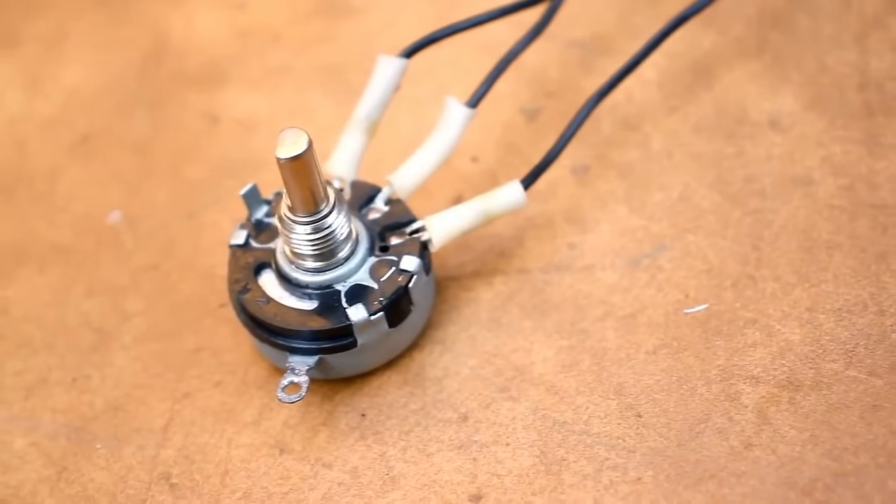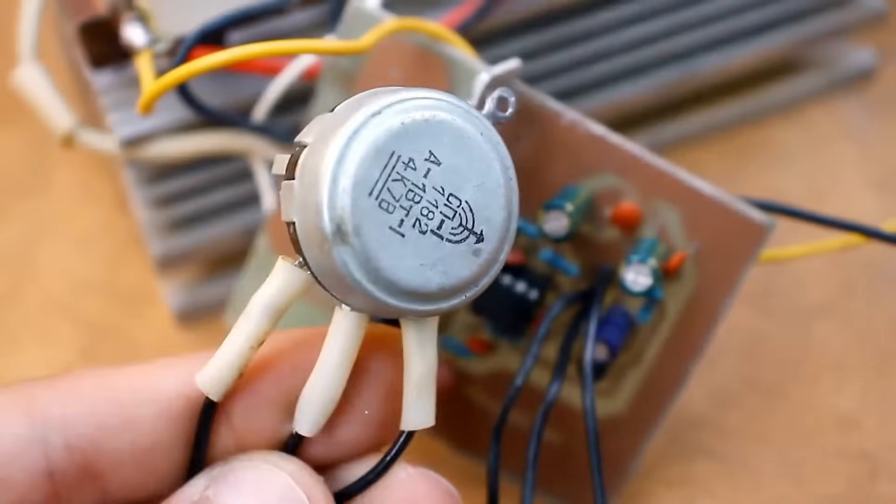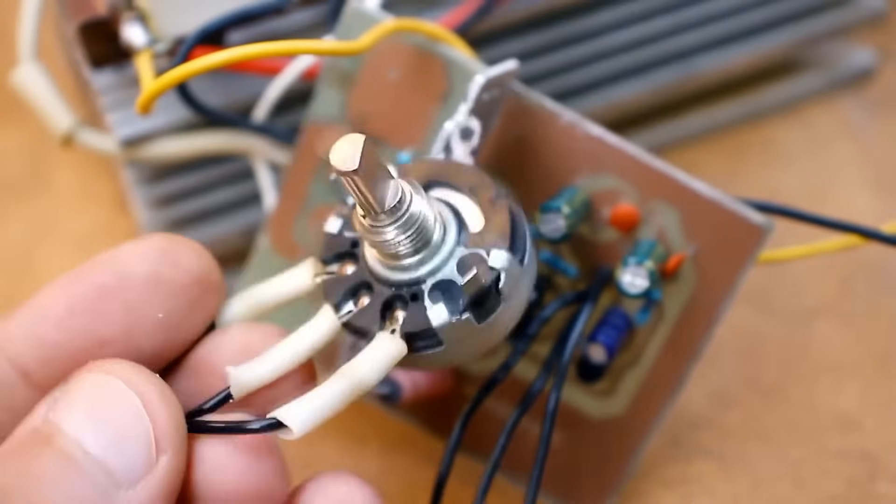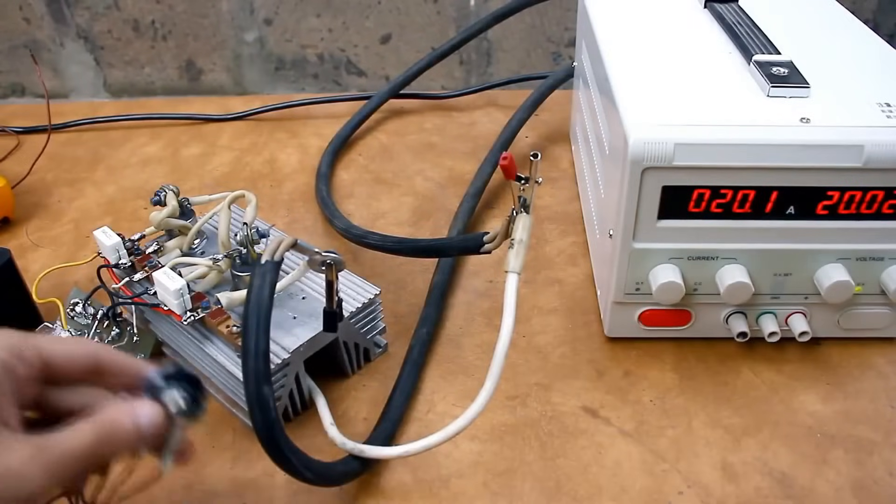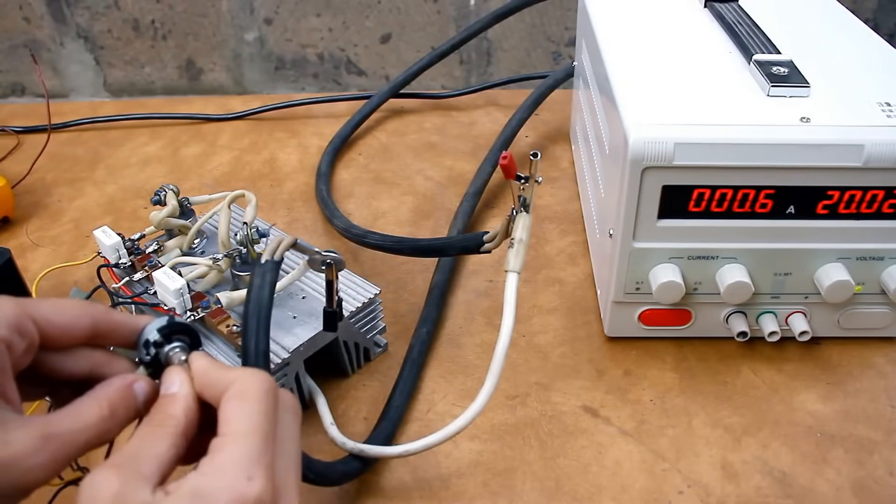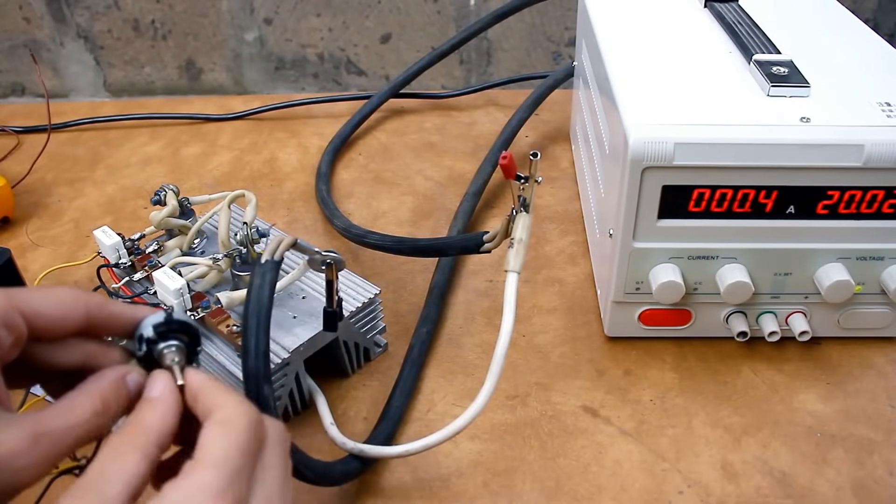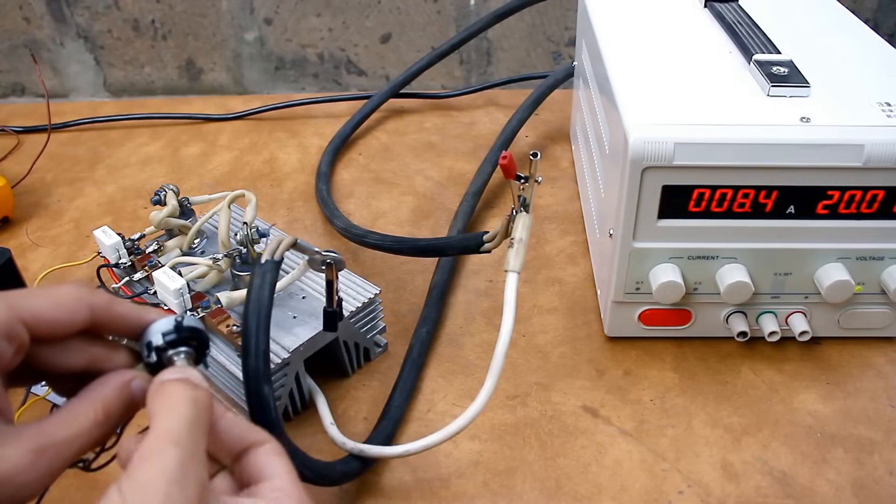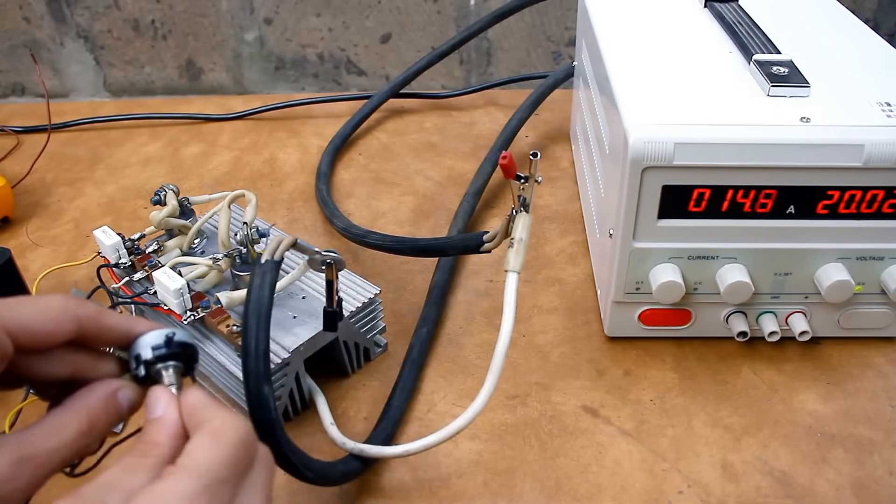The same can be said about the voltage. With this setup, I wouldn't recommend applying more than 40V to the load. And most importantly, regardless of the current or voltage, you need to understand that this load can dissipate a maximum of 150W. It's better to install a wattmeter at the input to avoid accidentally exceeding the allowable power.